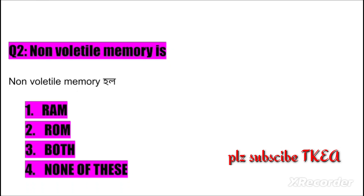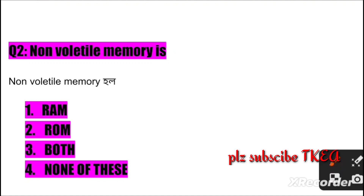Question number two: Non-volatile memory is? Option one: RAM, two: ROM, three: both, four: none of these. The right answer is number two: ROM.